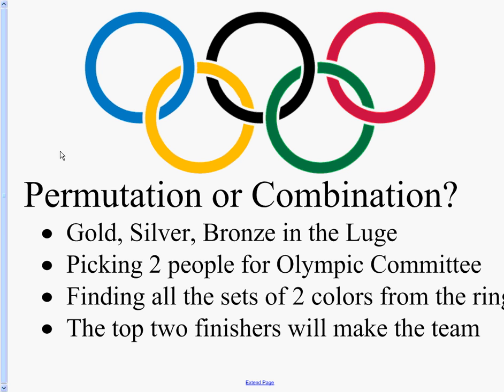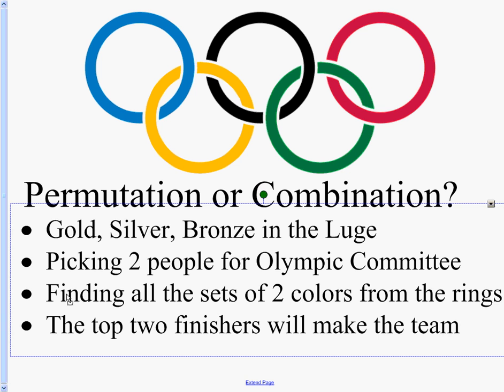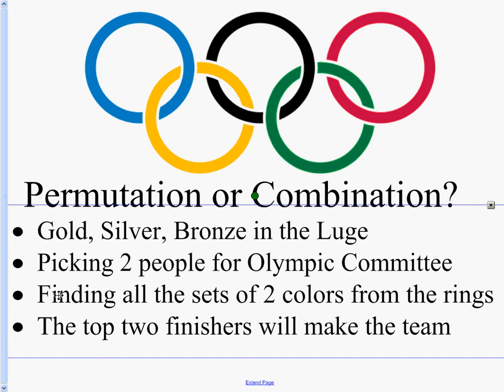This one, finding all sets of two colors from the rings. Some kids last hour said permutation. Why do you think they might have said permutation? What's the key question here about the rings? Does the order matter or not? And if it's not clear, you're welcome to ask me, because then the question really wasn't a very good question. Because you need to know, does it matter or not? Because if green-yellow is different than yellow-green, then I should use the permutation. But it's not super clear. Since it doesn't mention the order, I would have picked combination too.